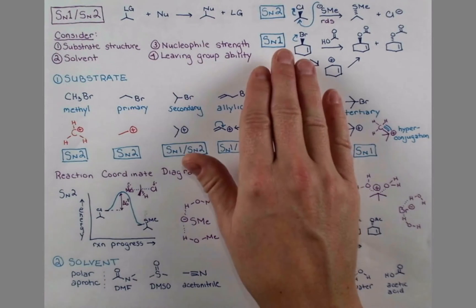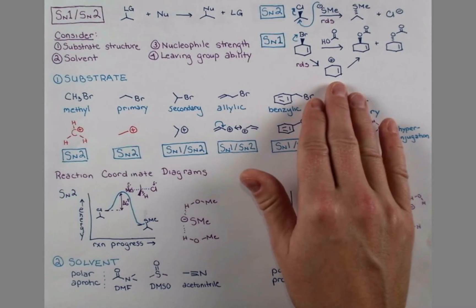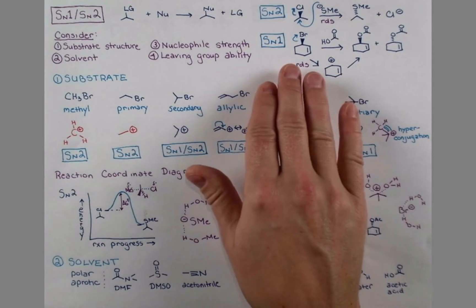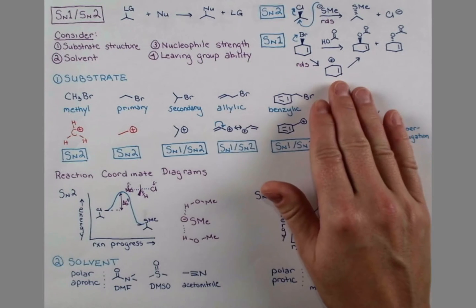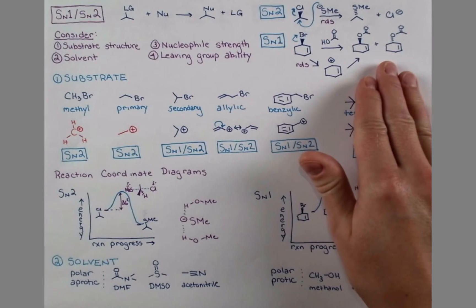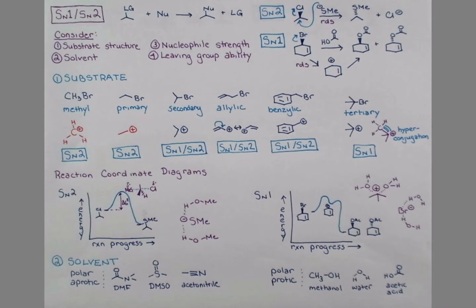By contrast, the SN1 mechanism goes through a carbocation intermediate, thus only this one compound is involved in the rate determining step. Once the carbocation is formed, it reacts with a nucleophile to give products.